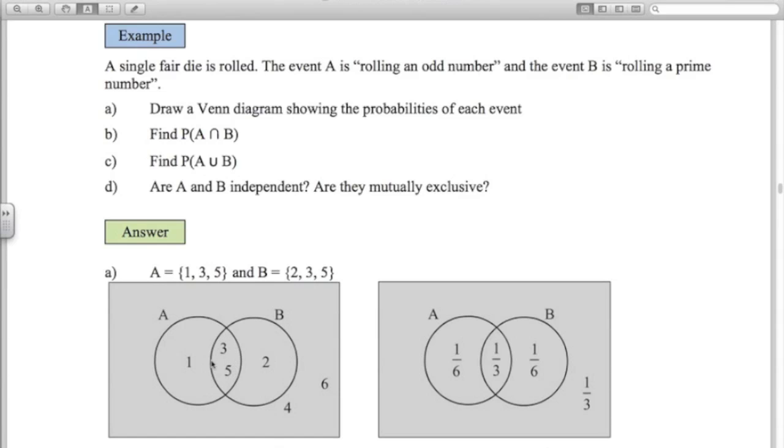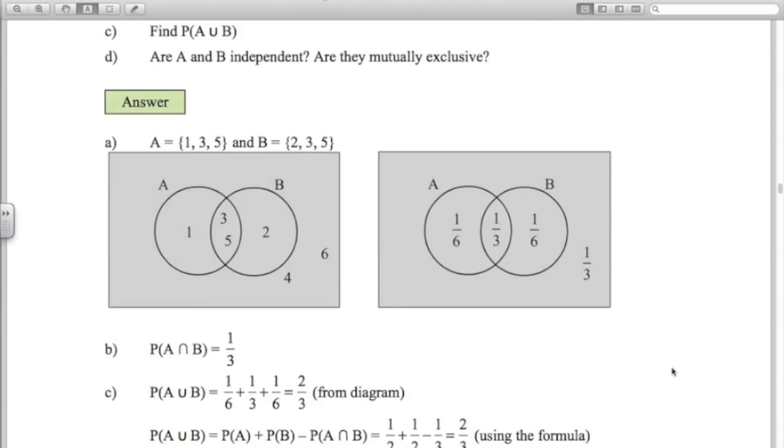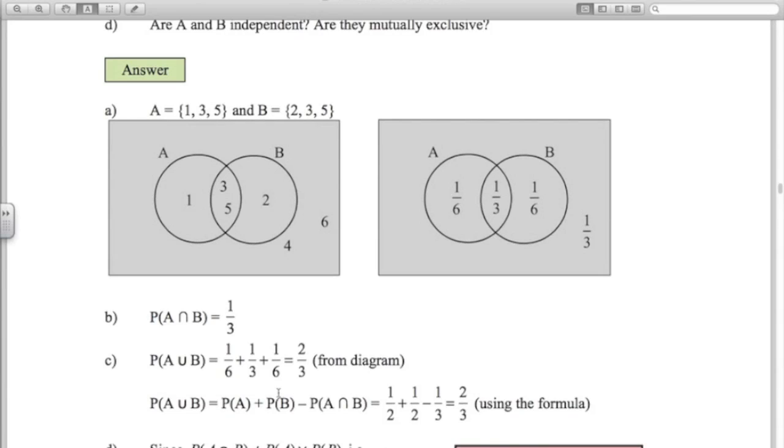So the probability of getting A and B is 2 outcomes out of 6 or 1 third. So the answer to B, the probability of A intersection B is 1 third. The probability of A union B. Well, we could look at our Venn diagram and add these three probabilities together. 1 sixth plus 1 third plus 1 sixth which would give us 2 thirds. Or we could use the formula. The probability of A or B is the probability of A plus B minus the intersection. So 1 half plus 1 half minus 1 third.